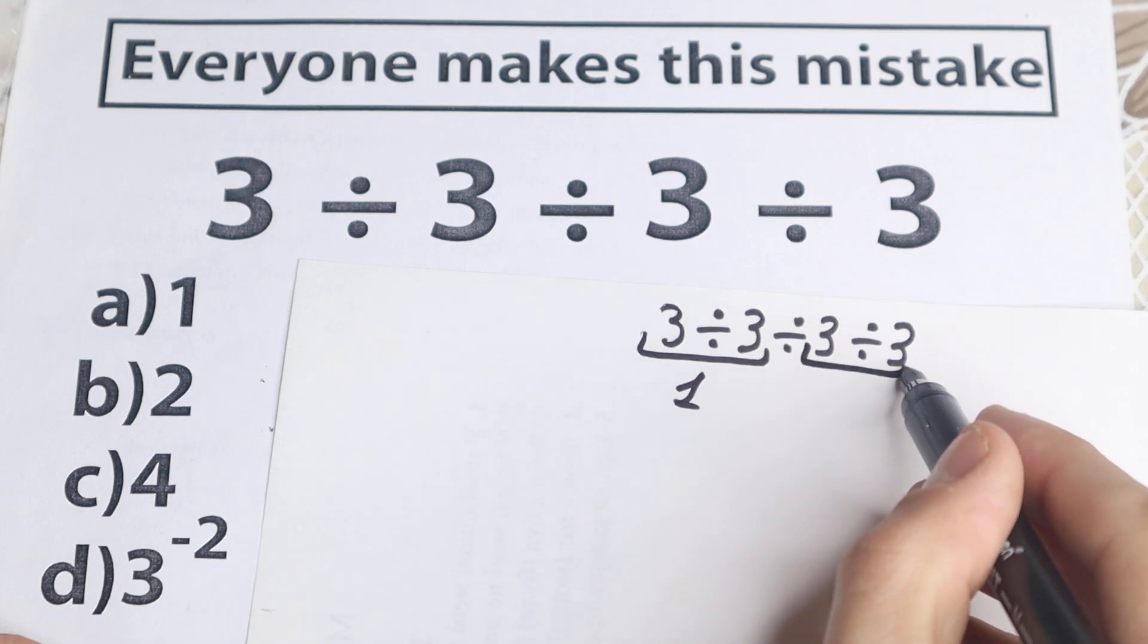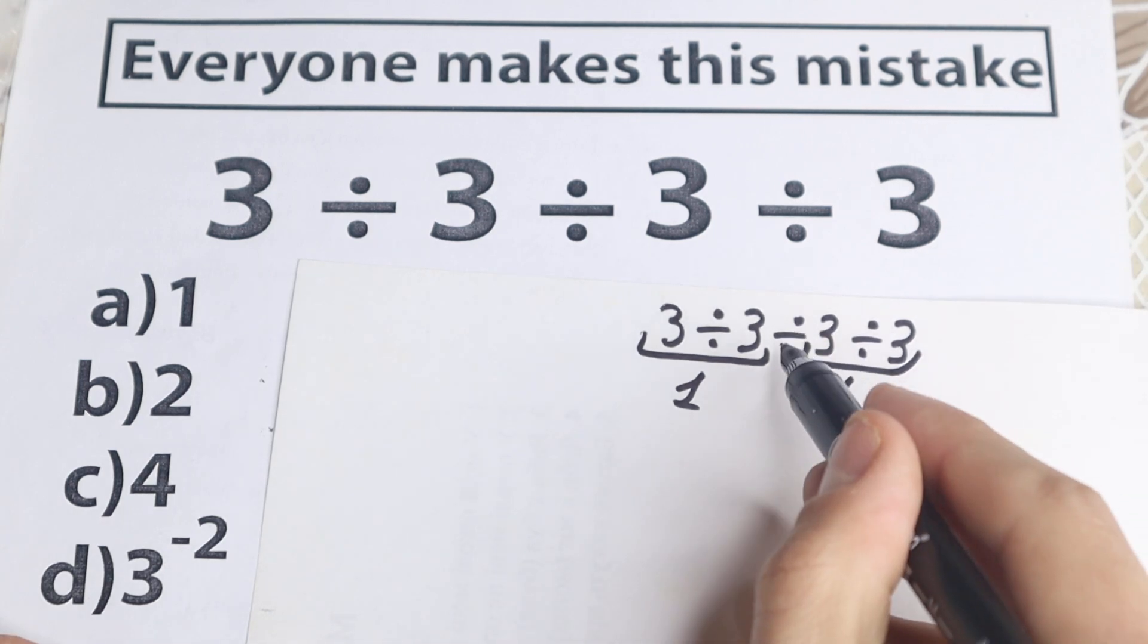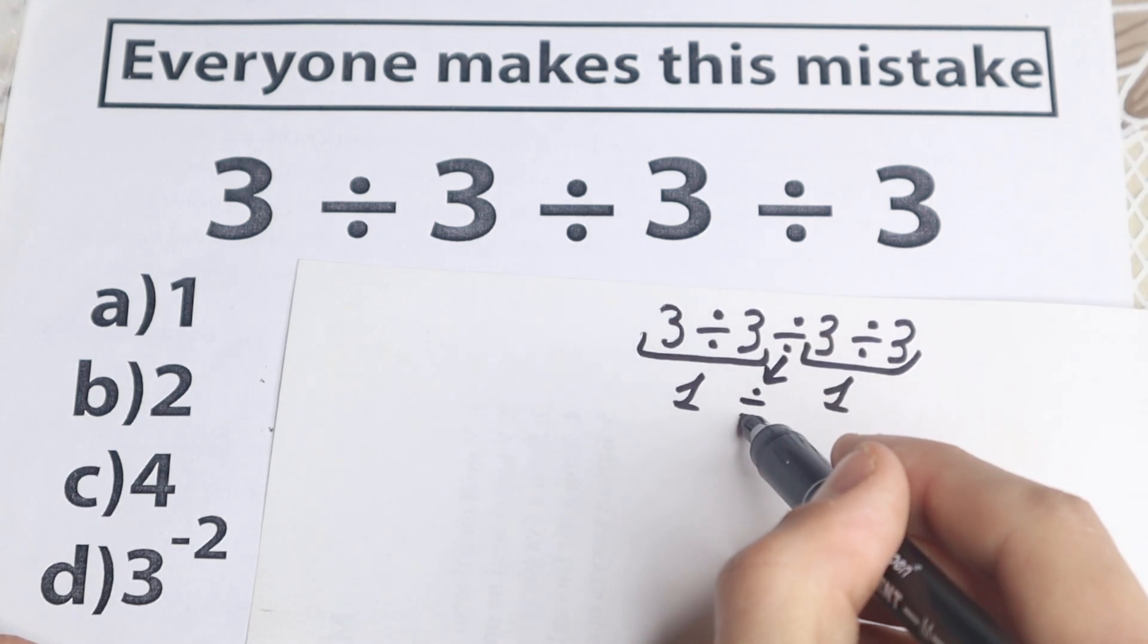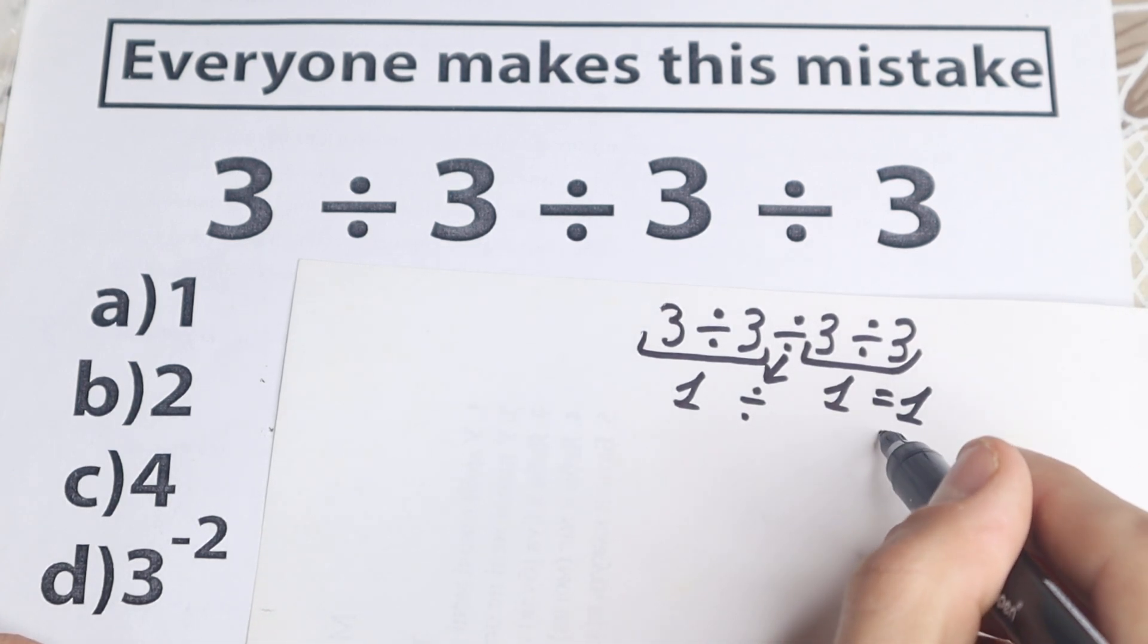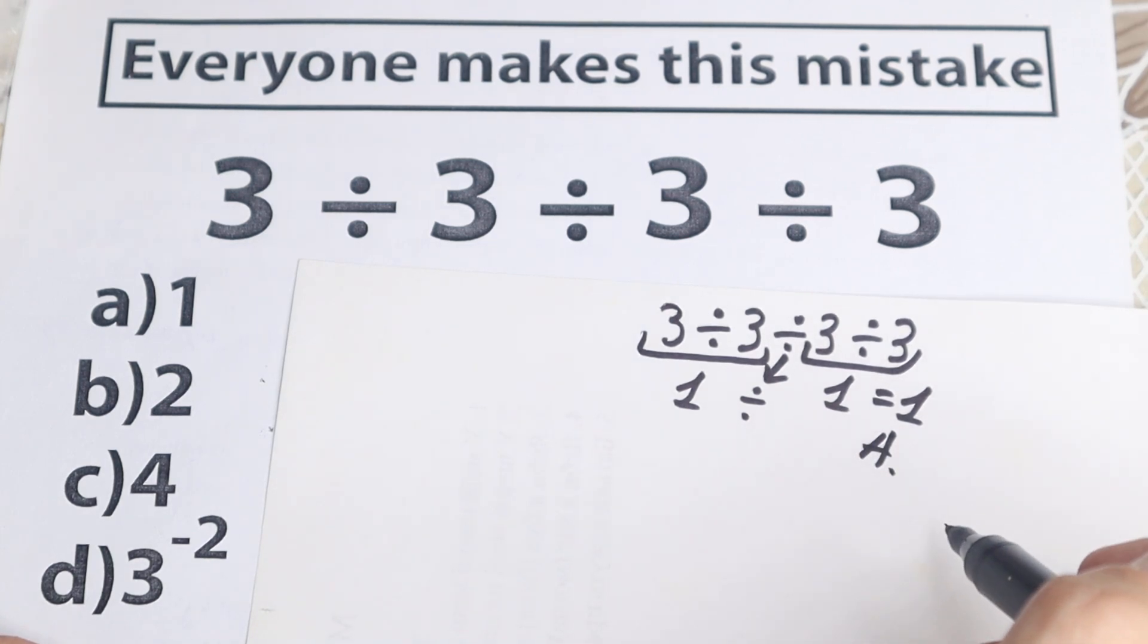And on the right hand side, 3 divided by 3, this is equal to 1. And they still have division in the middle, so 1 divided by 1 equal to 1. And they say, option A is a correct answer to this problem.